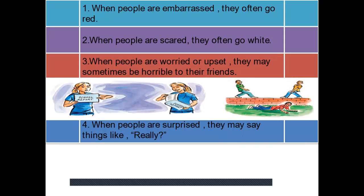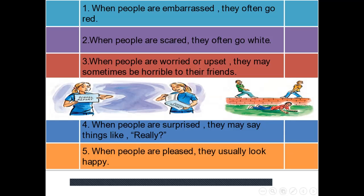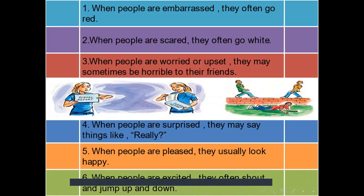The same thing is with number three. When people are worried or upset, what happens to them? They may sometimes be horrible to their friends. Notice that in the whole sentence, we use present simple in the first part and also in the second part. They sometimes, they may be. I don't say 'they might be' in the past. Okay. Yes. Now. Number four. When people are surprised, they say things. They may say things like 'really'. When they are surprised. Number five. When people are pleased, they usually look happy. Notice that every time: usually, always, often, sometimes. All these things are indicators that these are repeated habits. Things that happen at any time. Could be facts. The last one. When people are excited, they often shout up and jump up and down. That's the end of these things. There. You.